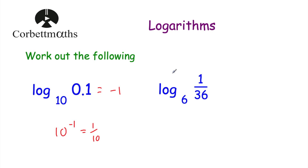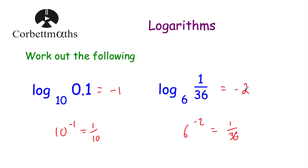This time we've been asked to work out log to base 6 of one thirty-sixth. What power would you raise 6 by to get to 1 over 36? Well, 6 to the power of negative 2 would be equal to 1 over 36 — remembering negative indices, if we've got the power of negative 2, it's 1 over 6 squared, and 1 over 6 squared is 1 over 36. So the answer is negative 2 — log to base 6 of one thirty-sixth is equal to negative 2.